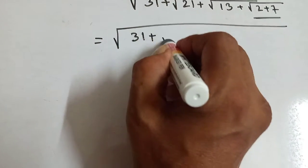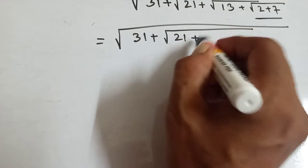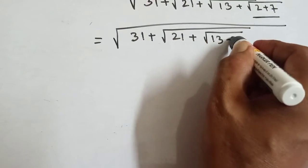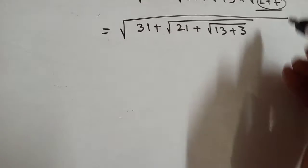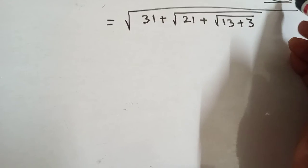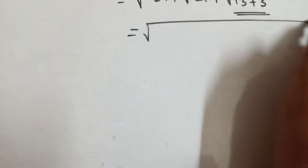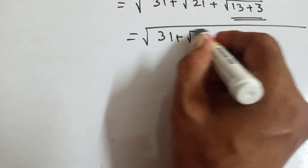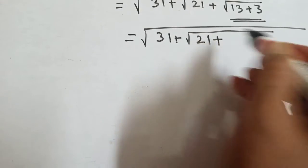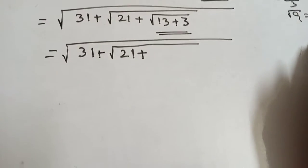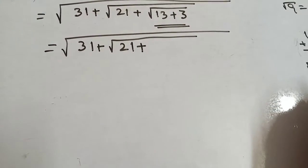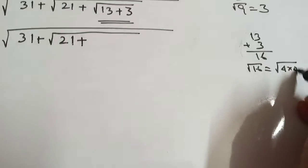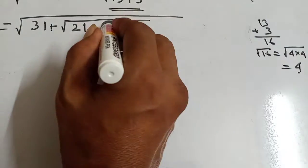From this part the result is 3, because 2 plus 7 is 9, and Square Root of 9 means 3. Now we will write Root under 31 plus Root under 21 plus 13 plus 3, which equals 16. Square Root of 16 equals 4.